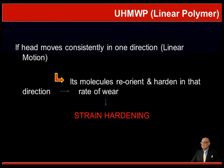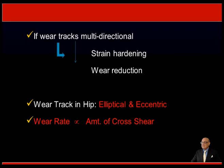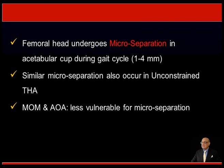In ultra-high molecular weight polyethylene, if the head moves consistently in one direction—linear motion—its molecules reorient and harden in that direction, leading to strain hardening. If the wear tracks in multiple directions, this also leads to strain hardening and wear reduction. The wear track in hips is elliptical and eccentric, and the wear rate is proportional to the amount of cross-shear. The femoral head undergoes micro-separation in the acetabular cup during the gait cycle by 1 to 4 mm. Similar micro-separation also occurs in unconstrained total hip arthroplasty. Metal-on-metal and alumina-on-alumina (ceramic-on-ceramic) hips are less vulnerable to micro-separation.